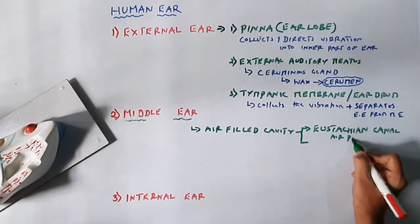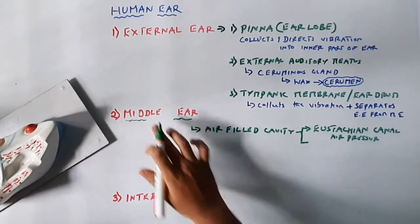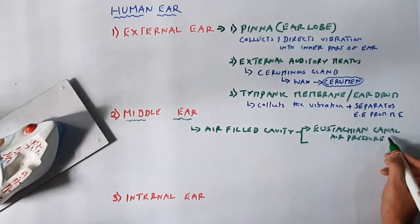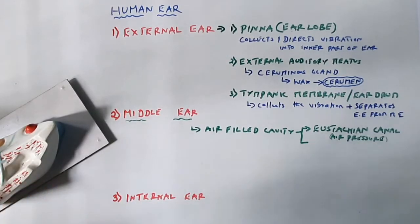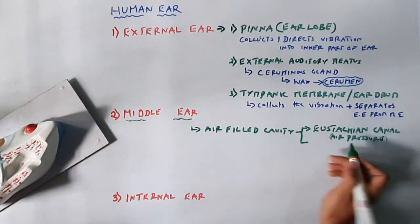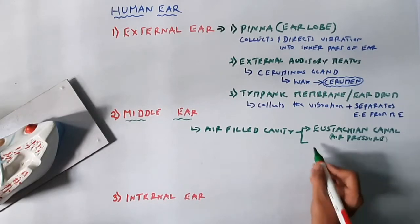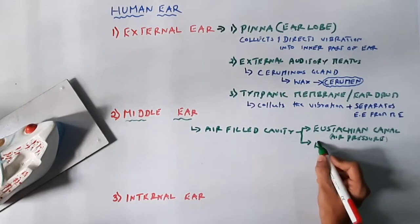The Eustachian canal is very important because it maintains air pressure — the equilibrium between the middle ear and the pharynx, or between the external ear and the middle ear. This pressure balance is essential for normal hearing.